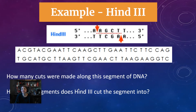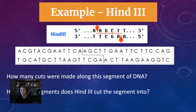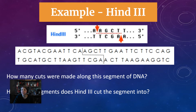Here's an example: HIND3. HIND3 is looking for AAGCTT. We look along the top portion of the DNA for this segment and we find one right here. When we do that, we cut based on how the restriction enzyme cuts. This one cuts down between the two A's on top, cuts over, and then cuts down between the two A's on bottom. So this restriction enzyme will make one cut but will give us two fragments of DNA.